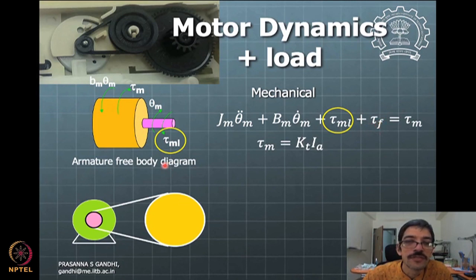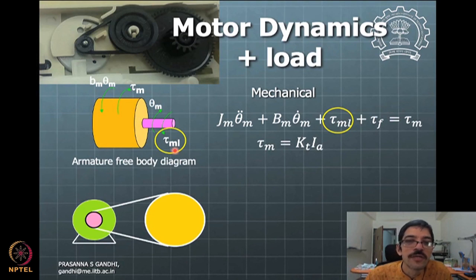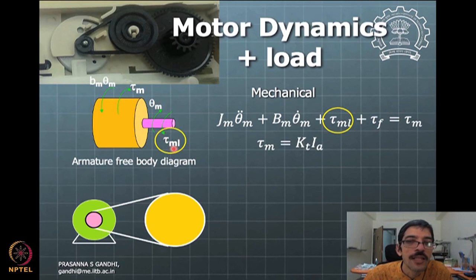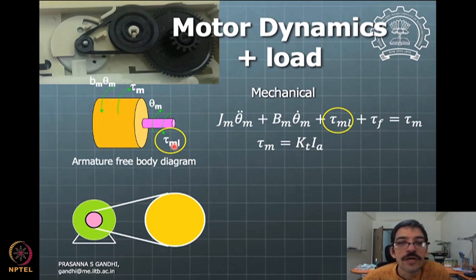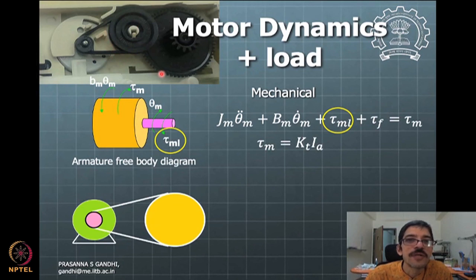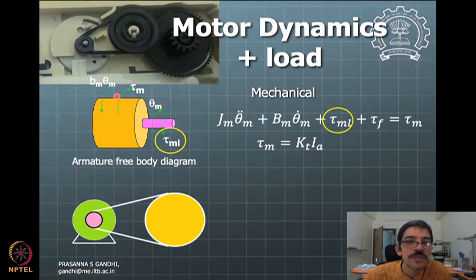Now what we are going to do is: typically motors are not alone — they will have some load or some application to be driven. When that application is getting driven by the motor, the torque corresponding to that on the motor side will come. This is a load torque which is seen on the motor side. That is why this torque is called tau_ML — M stands for the motor side torque, and L is because it is due to the load. Say we have this load as we have seen in the CD-ROM drive, like some kind of a belt drive. We are just considering a simple load here — a simple gear, belt-driven rotary disk.